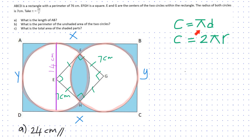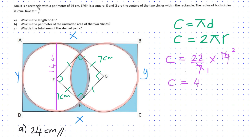The circumference formula is C equals pi times D. I will use the diameter in this instance, though you can also use C equals 2 pi R. We are told to take pi equals 22 over 7. So C equals 22 over 7 times D, which is 14. Solving this, the circumference of one circle is 44 centimeters. Since both circles are equal, the total perimeter of the unshaded area is 44 times 2, which is 88 centimeters.